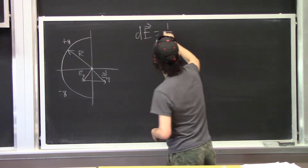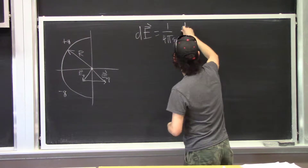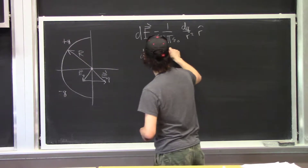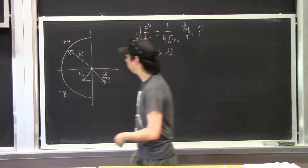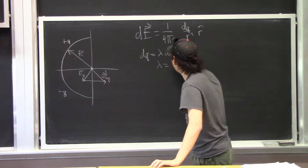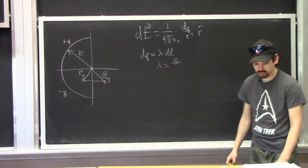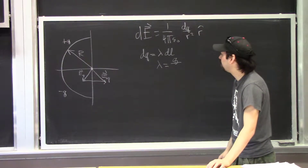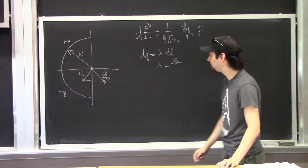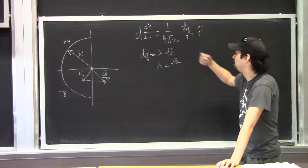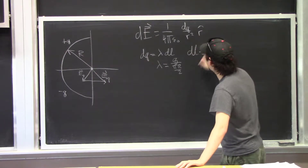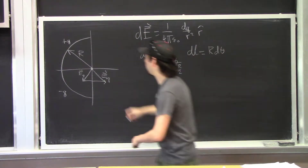dE is equal to 1 over 4π ε₀ times dQ over R² times R-hat. dQ as always is just going to be λ dL. For this part of the arc, which I'm going to treat first, λ is going to be equal to Q divided by a quarter of the arc of a circle. An entire 360° rotation gives you the circumference 2πR, so this quarter arc is πR divided by 2.